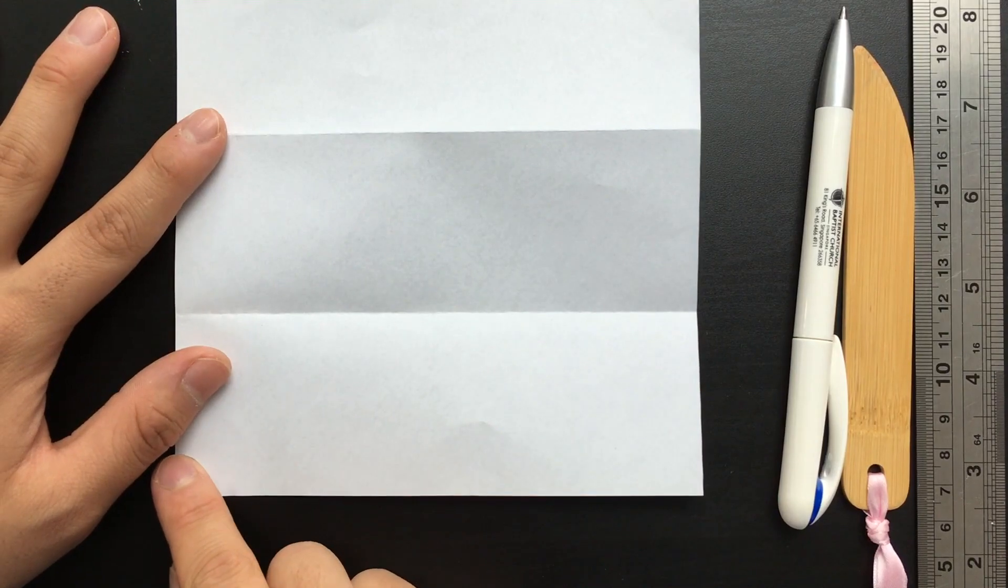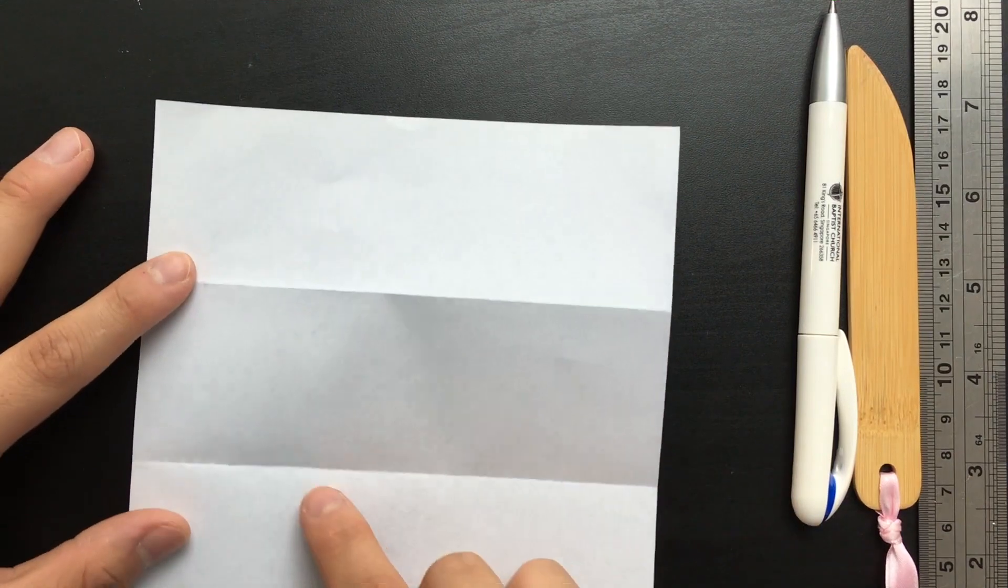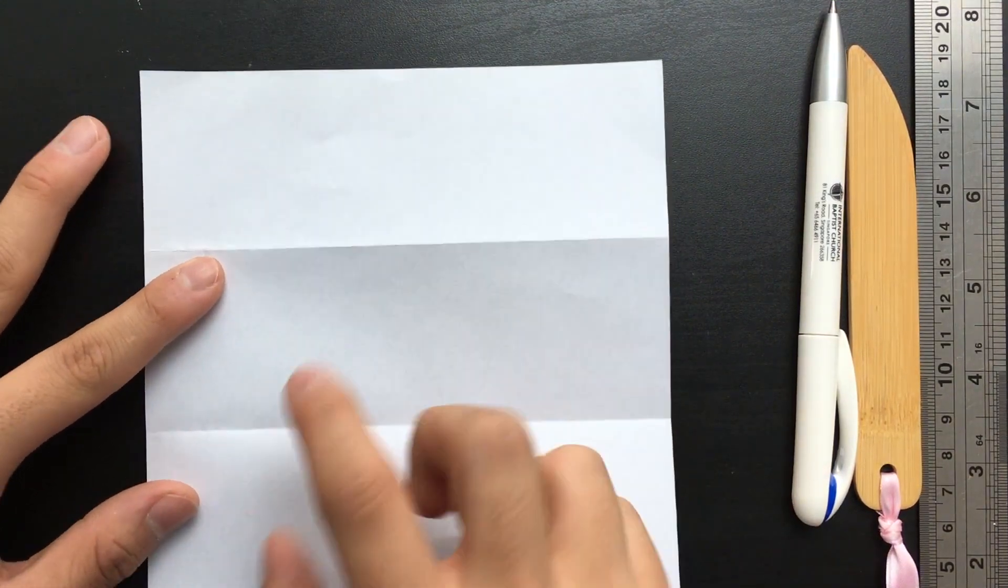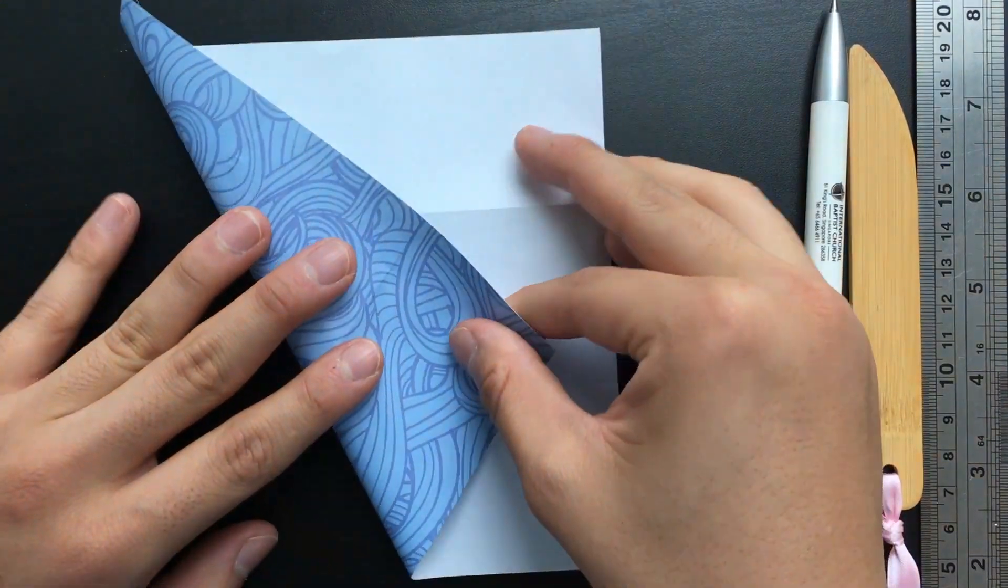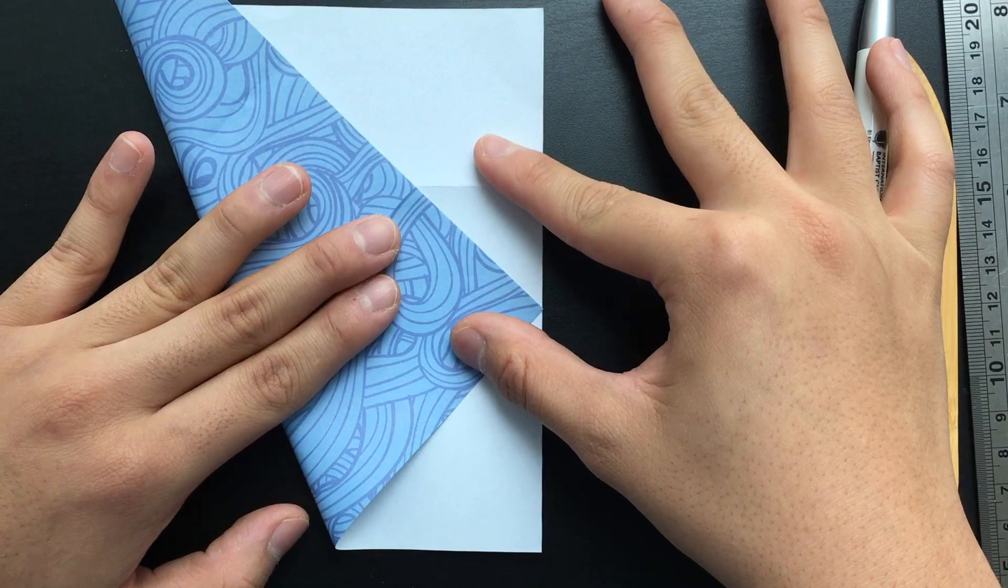Now you want this fold to bring the first fold, the bottom fold, up to the second fold or the top fold and this will take again some approximating and adjusting like you did with dividing the paper into three equal segments.